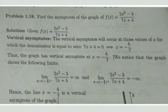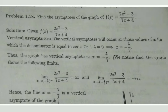First we shall find vertical asymptotes. To find the vertical asymptote, we check where the denominator equals zero. The vertical asymptote occurs at values of x for which the denominator equals zero. In the given function, the denominator is 7x + 4, so 7x + 4 = 0 gives x = -4/7. Therefore the vertical asymptote occurs at x = -4/7.